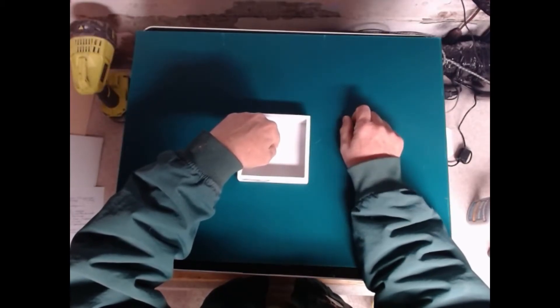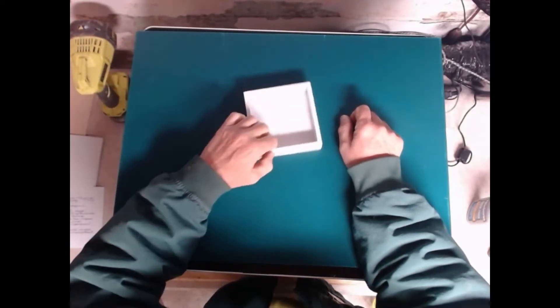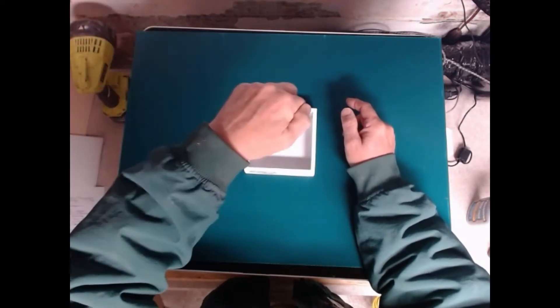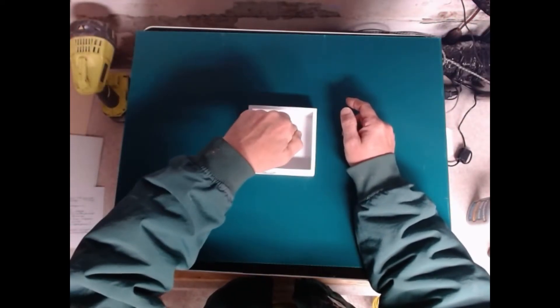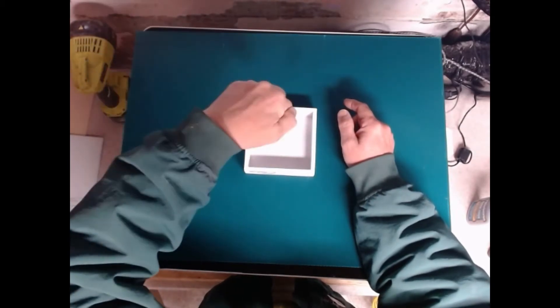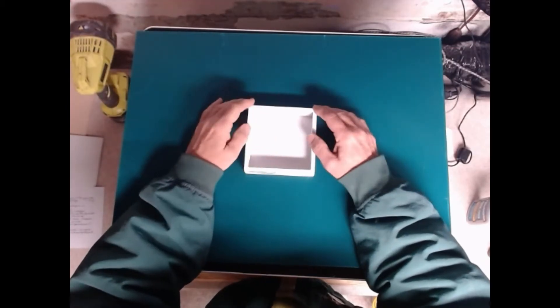So what we need to do is we need to find a way that we can make the head come in, do the autofocus, pull back up, leave, and when we go to print, it comes in from the top and goes back down so we don't either damage the head or knock the piece away.